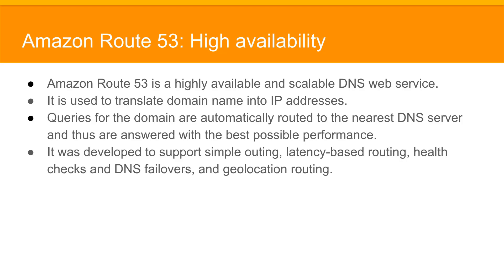Next is Amazon Route 53 — a highly available and scalable DNS web service used to translate domain names to IP addresses. Queries for the domain are automatically routed to the nearest DNS server for the best possible performance. It supports simple routing, latency-based routing, health checks, and geolocation routing, all of which increase the availability of your customer-facing applications.